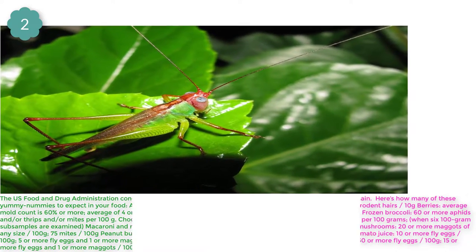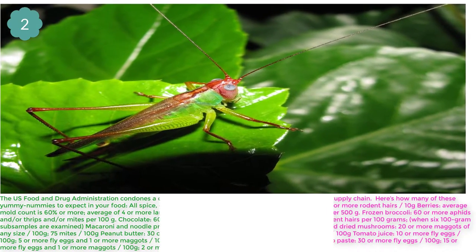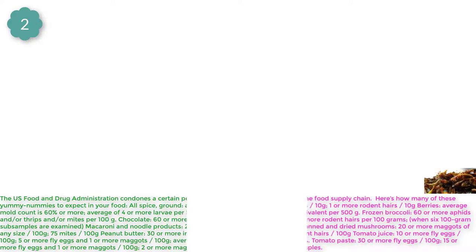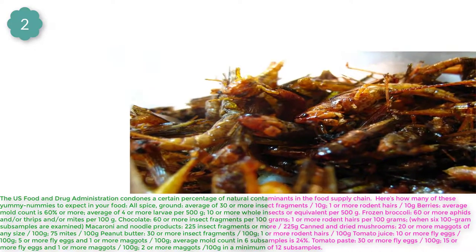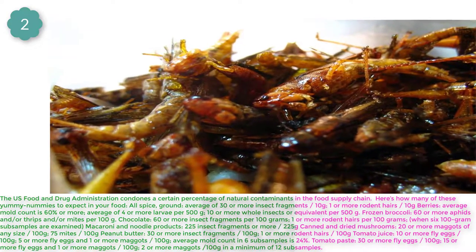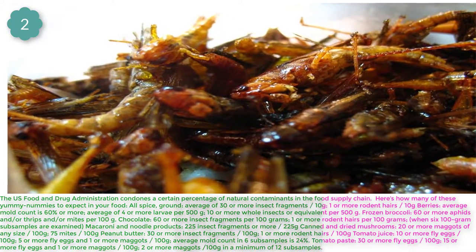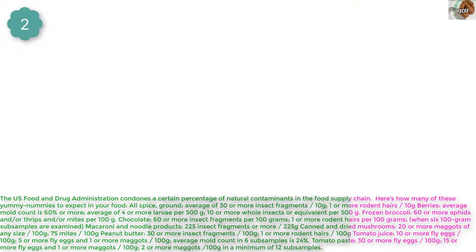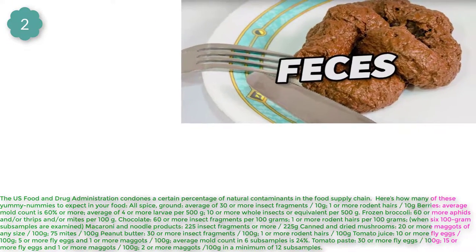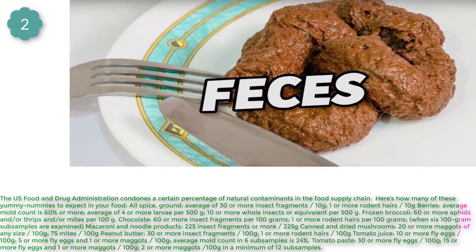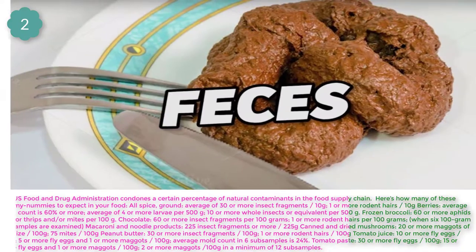Number 2: Insect filth, mold, rodent filth, and maggots. The US Food and Drug Administration condones a certain percentage of natural contaminants in the food supply chain. For example, allspice ground contains an average of 30 or more insect fragments per serving.